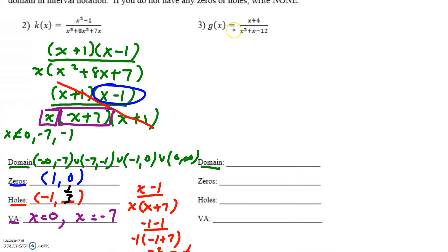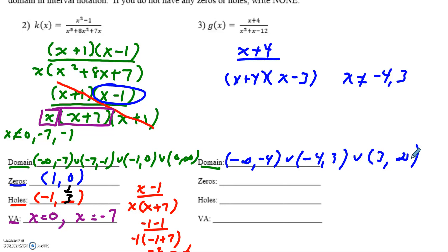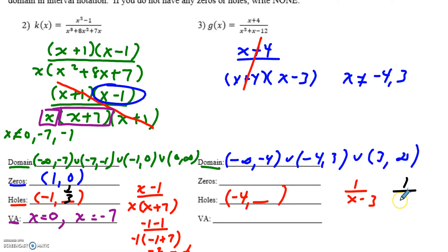Number three: the top is not quadratic so it cannot be factored, but the denominator factors into x plus four and x minus three. Before crossing anything out, x cannot be negative four or positive three, so my domain is negative infinity to negative four, union negative four to three, union three to infinity. I cross out the x plus fours, leaving one over x minus three. The hole is at x equals negative four, and plugging into the reduced function gives one over negative four minus three, so the hole is at negative four comma negative one seventh.